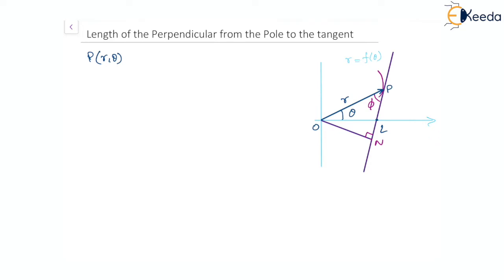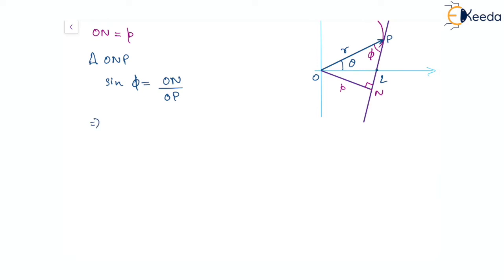Let p denote the perpendicular distance of the tangent from the pole, that is ON. In the right triangle ONP with angle phi, we can say that sin(φ) = opposite side ON divided by hypotenuse OP. From here we get OP × sin(φ) = ON, which gives us the relation r·sin(φ) = p. This is one of the key relations we are looking for.